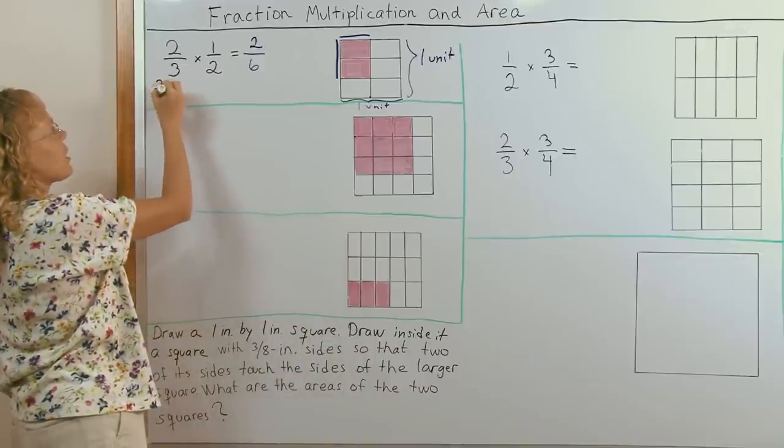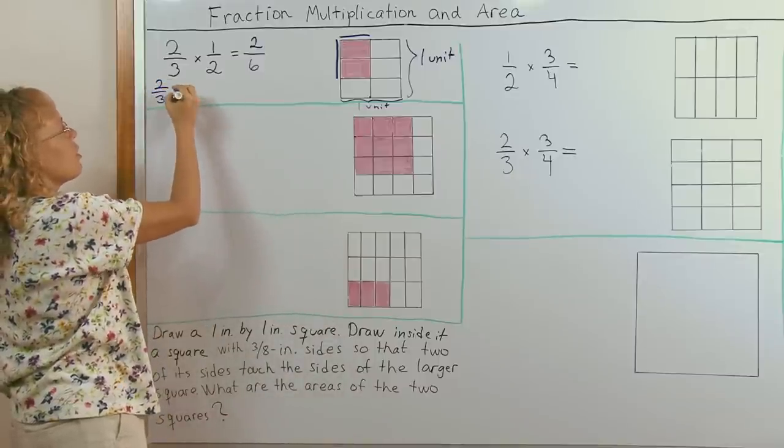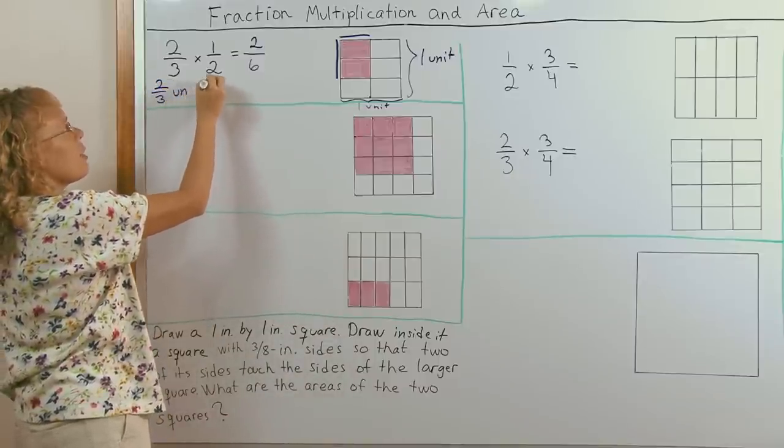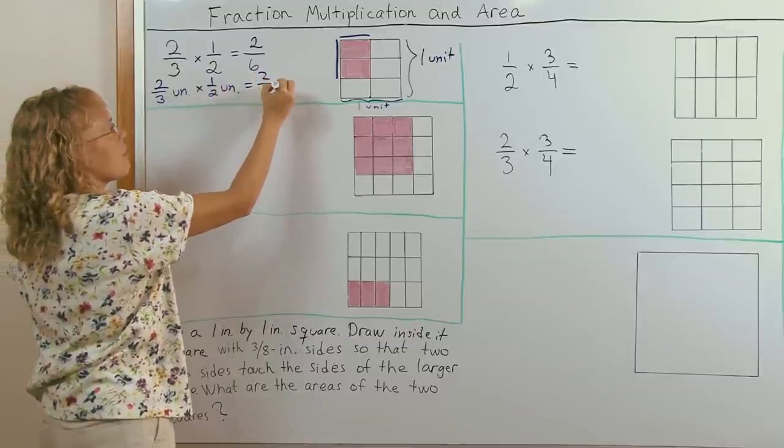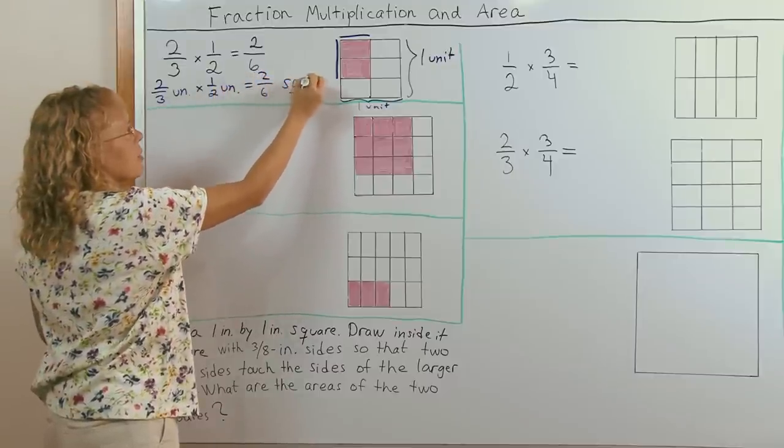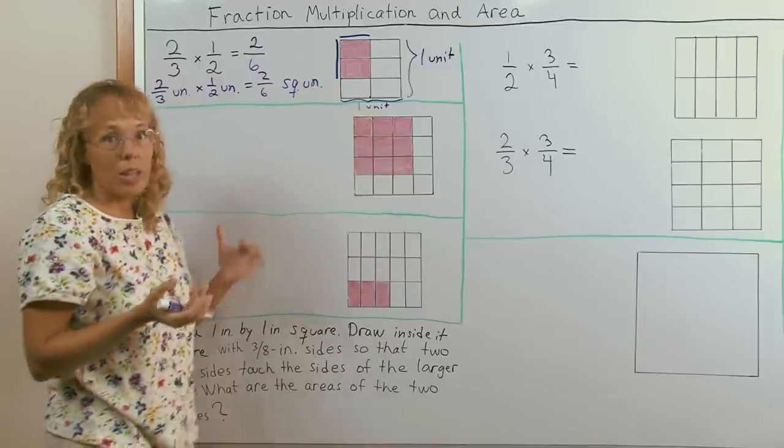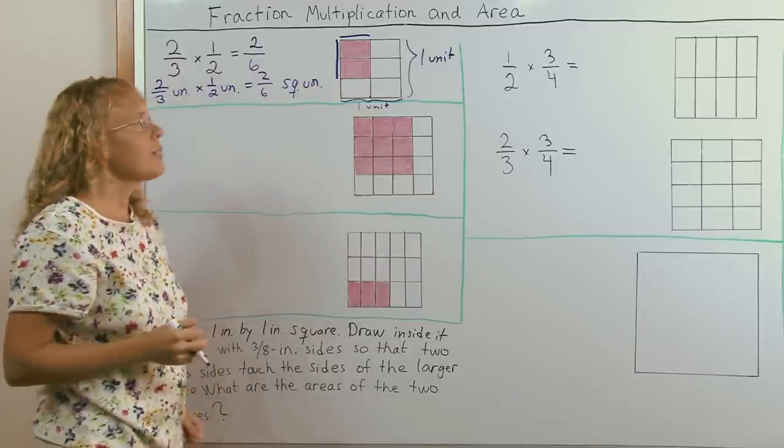I can see half is colored out of total six parts. And just remember, this is basically two thirds of a unit of some sort times half a unit equals two sixths of that kind of square unit. If you're teaching this, you can use inches or something like that if you want to.